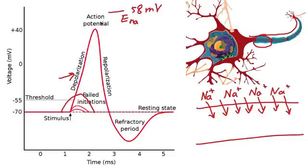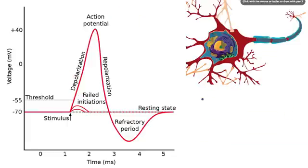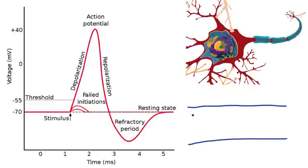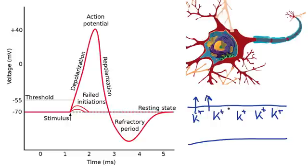At this point, voltage-gated potassium channels have enough voltage in order for them to open. So I'm going to erase all of this and draw the axon again here in blue. Inside the cell, we have a bunch of potassium ions. Now we have such a positive charge on the inside that potassium ions want to leave because positive repels positive. When voltage-gated potassium channels open, potassium can now leave the cell, so we have a lot of positive charge leaving the cell.